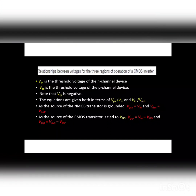V_TN is the threshold voltage of the N-channel device and V_TP is the threshold voltage of the P-channel device. For P-channel devices, V_TP is always assumed to be negative. The equations are given in terms of V_GS, V_DS, V_IN, and V_OUT. Since the source of the NMOS transistor is grounded, V_GSN equals V_IN and V_DSN equals V_OUT. The source of the PMOS transistor is tied to V_DD, so V_GSP equals V_IN minus V_DD and V_DSP equals V_OUT minus V_DD.